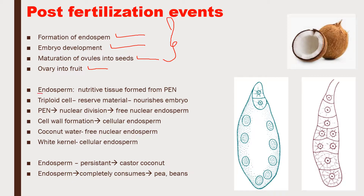The first one is the endosperm. Endosperm is a nutritive tissue which is formed from the primary endosperm nucleus, and this nourishes the developing embryo. The triploid cells of the endosperm are filled with reserve food materials, which can be used for the nutrition of the developing embryo.